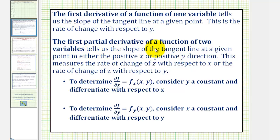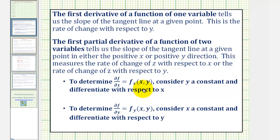The first-order partial derivative of a function of two variables tells us the slope of the tangent line at a given point in either the positive x or positive y direction. This measures the rate of change of z, or our function f, with respect to x, or the rate of change of z, or f, with respect to y, based upon which partial derivative we're determining. To find the partial derivative with respect to x, we consider y a constant and differentiate with respect to x. To find the partial derivative with respect to y, we consider x a constant and differentiate with respect to y.